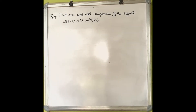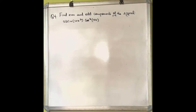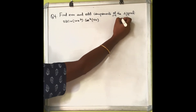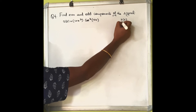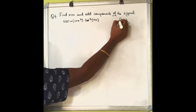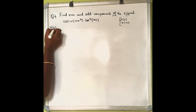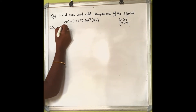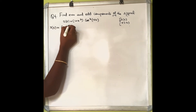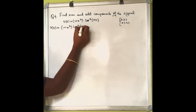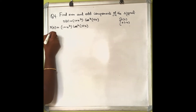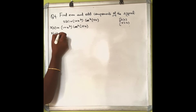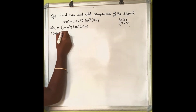Find even and odd components of the signal x(t) = 1 + t³cos³(10t). To find the even and odd components, we need x(t) and x(-t). x(t) we have; we will rewrite it: x(t) = 1 + t³cos³(10t). To find x(-t), replace t by minus t.